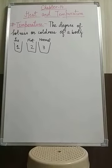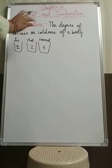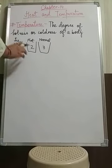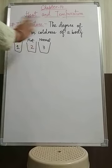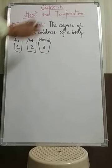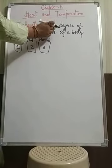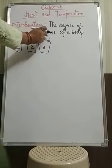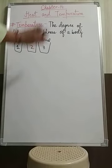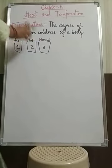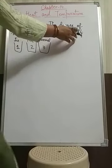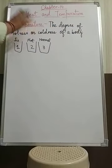We cannot say by how much an object is hot or cold just by touch, so we need something more precise. Ice and hot water have different degrees of heat energy, and that degree of heat energy is known as temperature. The degree of hotness or coldness of a body is called temperature — how much an object is hot or cold is called its temperature.